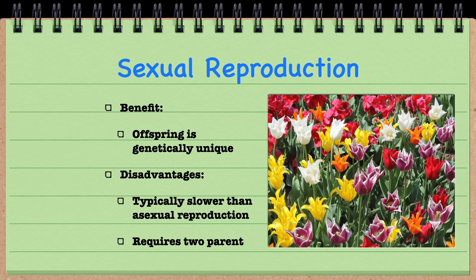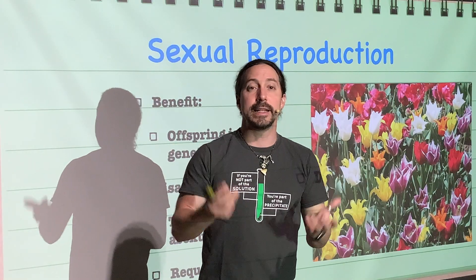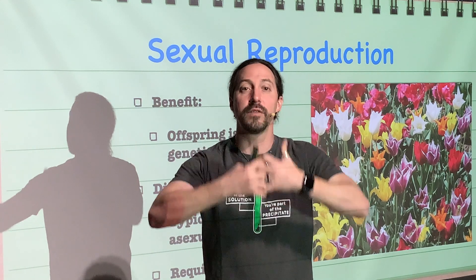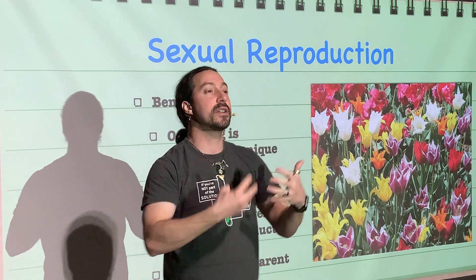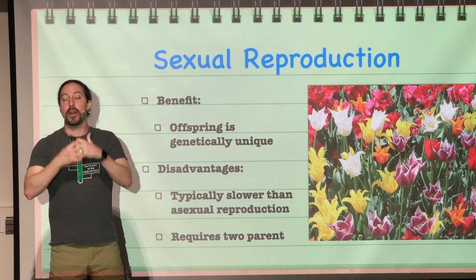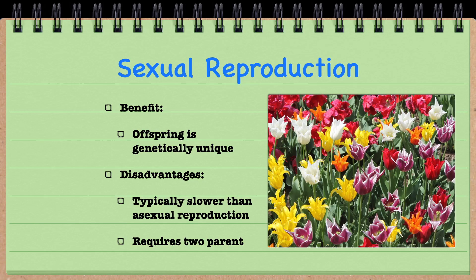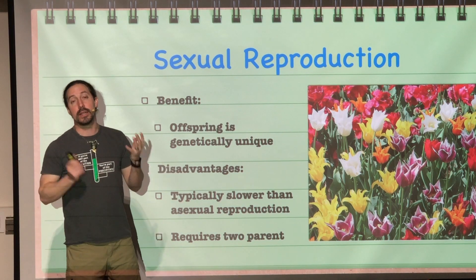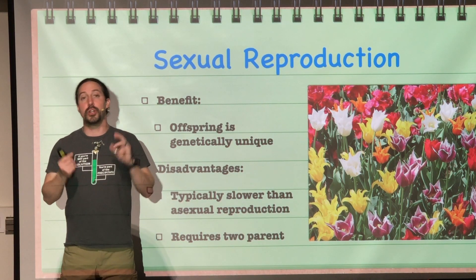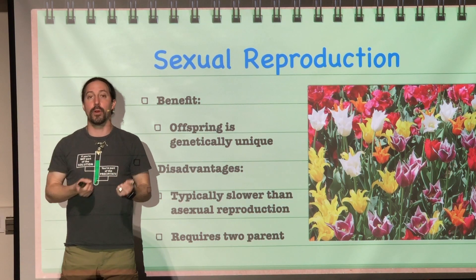For sexual reproduction, the benefit is that the offspring are going to be genetically unique — a combination of both parents' genes. That variability means it's much harder for a single factor to wipe out a population. The disadvantage, though, is that it's typically slower than asexual reproduction, and it requires two different parents.